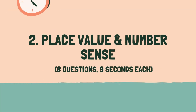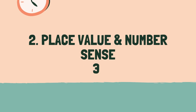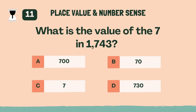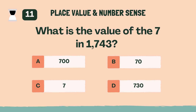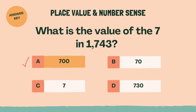Category 2: Place Value and Number Sense. 3, 2, 1, go. What is the value of the 7 in 1743? A, 700.